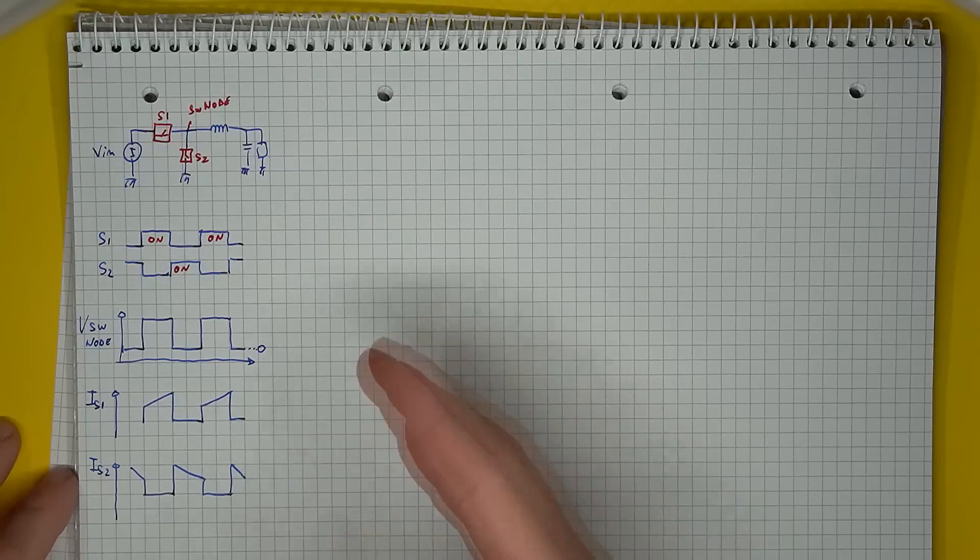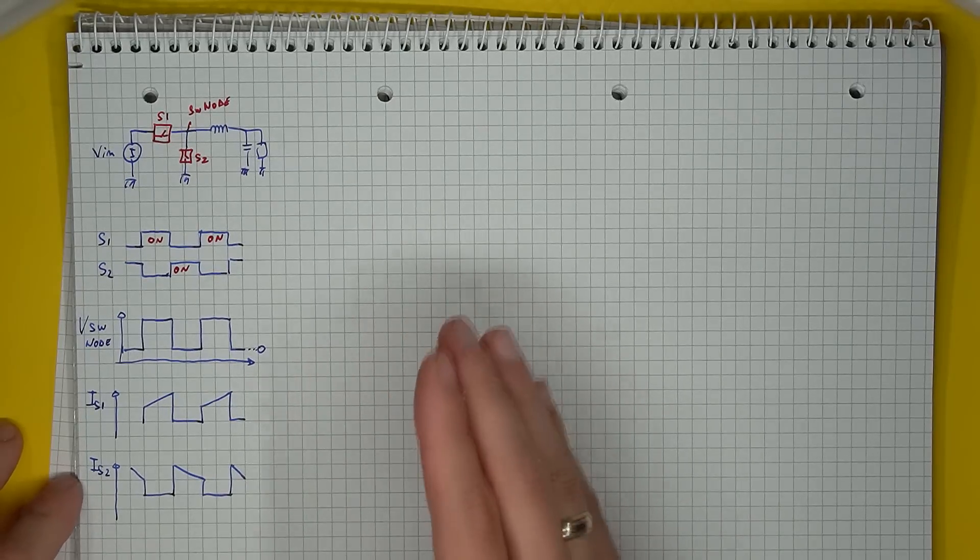So why do you get your overshoot and ringing in the first place? Well, let's start by looking at what we're supposed to be getting.